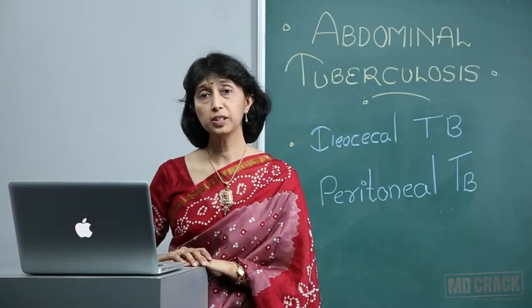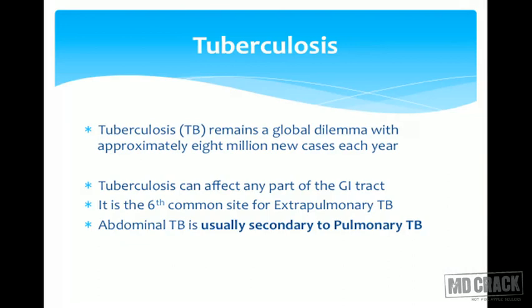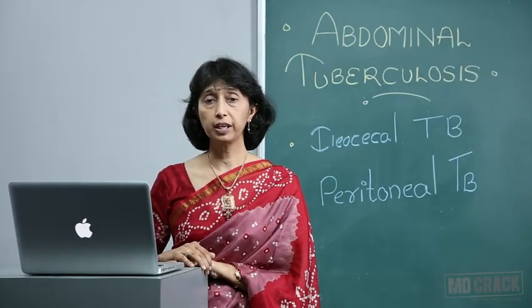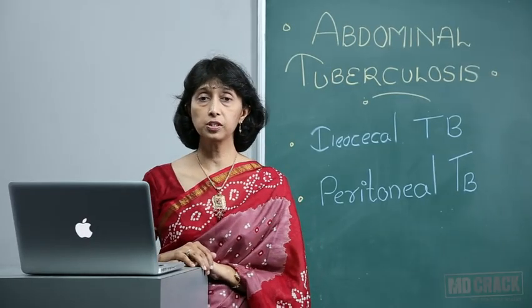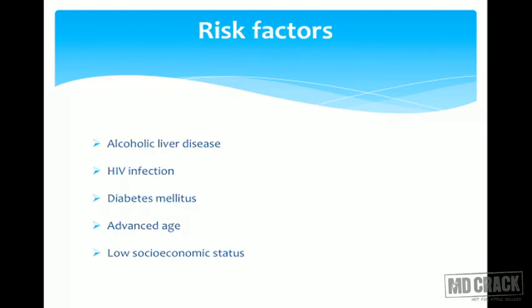The topic for discussion is abdominal tuberculosis. As we know, tuberculosis is a global dilemma. In developing countries it is always a problem, and with the advent of HIV infection and other immunocompromised conditions, it remains a problem. In the west there are many sites of tuberculosis involvement, the most common being pulmonary tuberculosis, but the GI tract can also get involved — it is the sixth most common site. Abdominal tuberculosis is usually secondary to pulmonary tuberculosis.